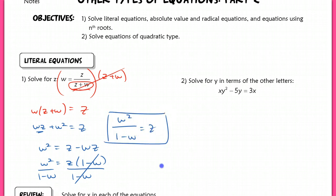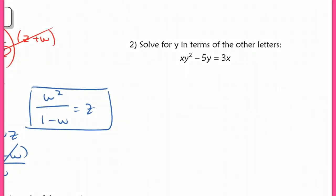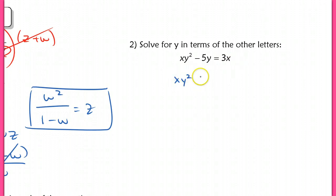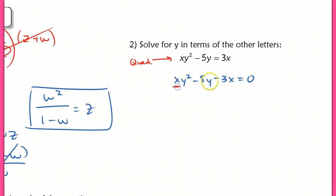In the second question, this is going to give people a lot of trouble because you're used to seeing a quadratic in terms of x, but now we're solving for y in terms of the other letters. So you're going to notice that this is actually a quadratic because you see y². You also see just a linear term, and this can be treated like a constant since you're not using x as your variable. I'm going to move this over and rewrite as: xy² minus 5y minus 3x equals 0. The tricky part is recognizing this is just a quadratic with an a term of x, a b term of negative 5, and a c term of negative 3x.